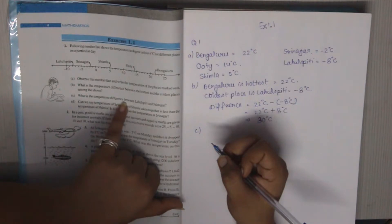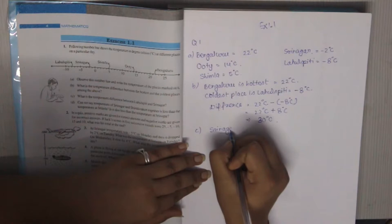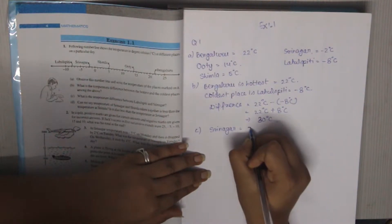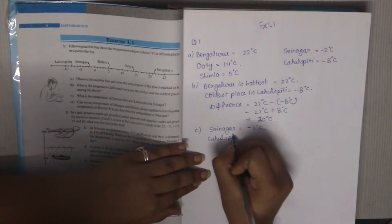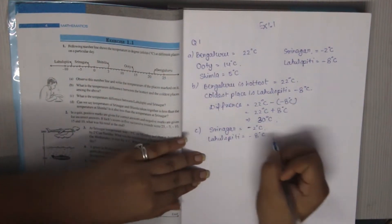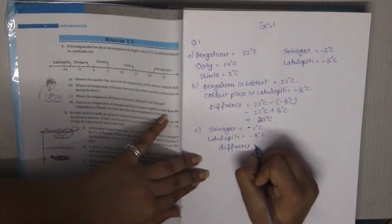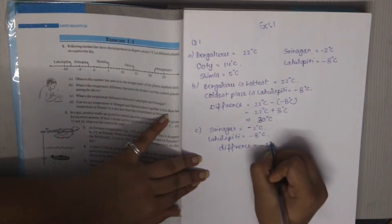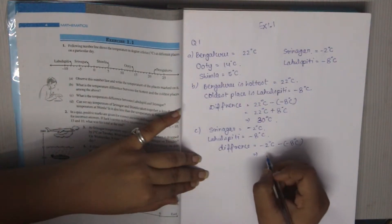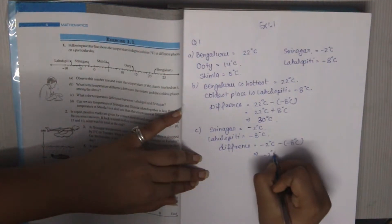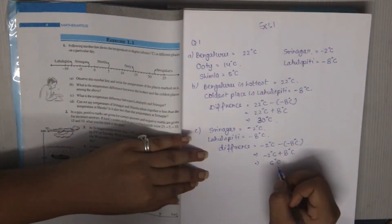Part C: What is the temperature difference between Lahul Spiti and Srinagar? Srinagar's temperature is minus 2 degree Celsius and Lahul Spiti's temperature is minus 8 degree Celsius. The difference is minus 2 minus (minus 8) degree Celsius. Minus and minus gives plus, so minus 2 plus 8 is equal to 6 degree Celsius.